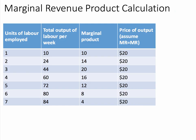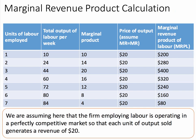We're going to assume that each unit of output created by workers has a market price of $20 per unit, and that average revenue equals marginal revenue — the price is the same. So if we multiply the marginal product by the price, we get the marginal revenue product, which here is expressed in dollars.